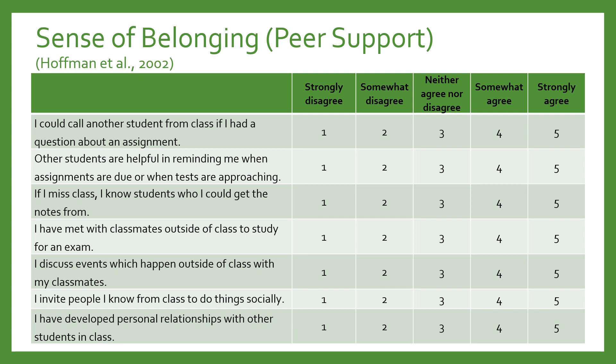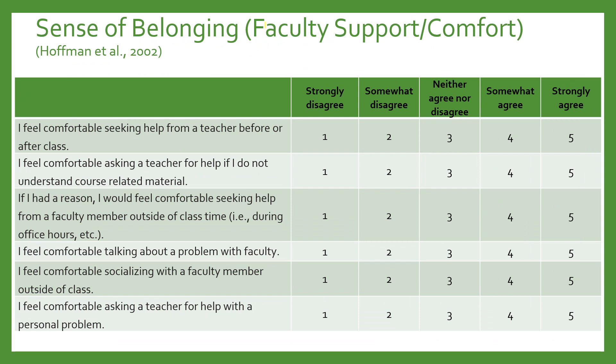Sense of belonging requires multiple items to tap into it, and peer support isn't the only type. Hoffman published several subscales of sense of belonging that tap into various aspects. Here's another subscale: faculty support and comfort — feeling comfortable seeking help from a teacher, feeling comfortable asking for help if you don't understand course material. Noticing that just asking people, do you feel supported by faculty, is not as useful as measuring in this detailed way. We're operationalizing these constructs well.